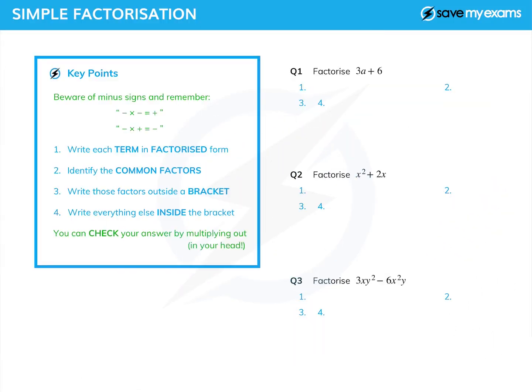In this tutorial we're going to look at what we call simple factorization, where we take an expression like this in question 1 and write it as something times a bracket. So how do we do that? Well, there are some basic rules with minus signs to remember, but actually they come later when we check our answer, so don't worry too much about those now.